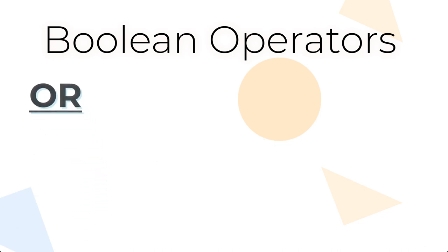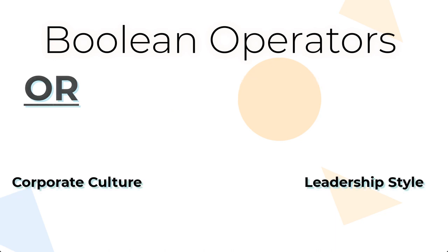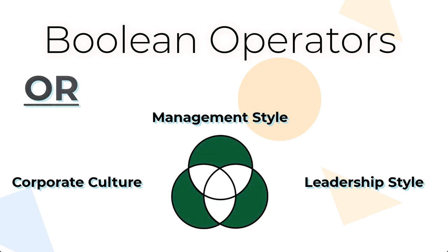OR broadens search results by including synonyms. Sometimes the words you are using to search with aren't the words that are used in the source you are trying to find. For example, you might be looking for corporate culture and leadership style articles, but the article you really want is focused on management style. To include all of these keywords in your search, you would use OR.